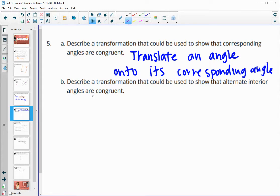And then alternate interior angles. So what transformation helps us to show that alternate interior angles are congruent? And this would be rotating an angle onto its alternate interior angle.